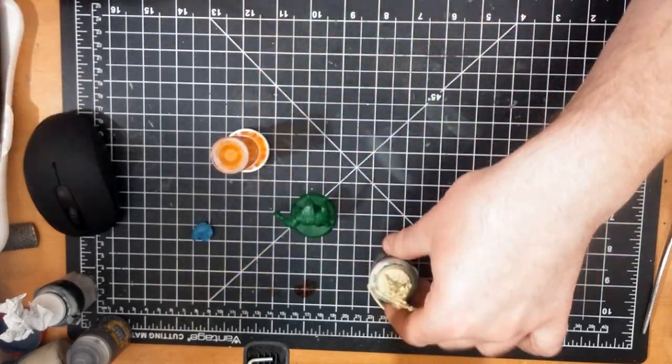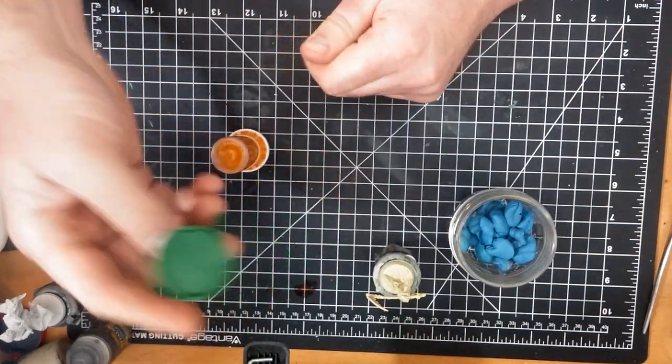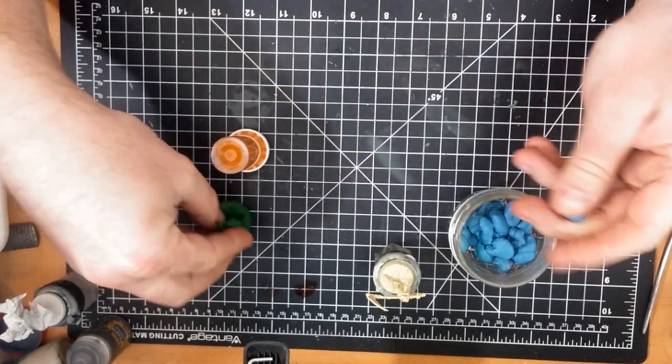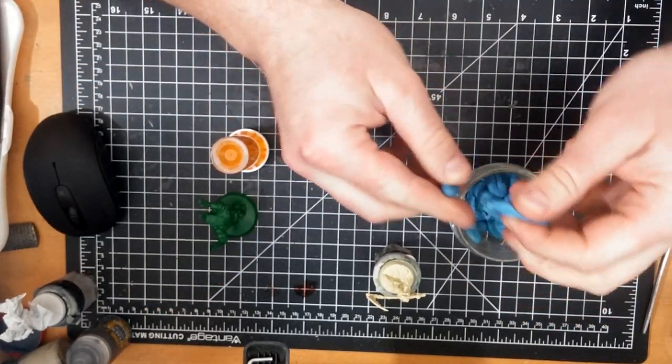Next up, this werewolf has a flat base. These can be a little trickier, so I usually use a little more blue tack for them.